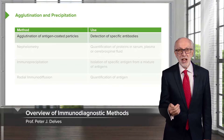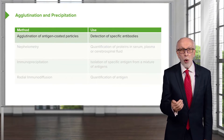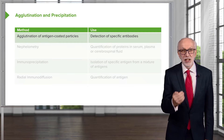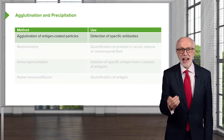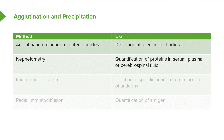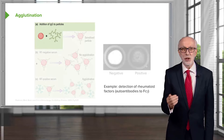Agglutination and precipitation can be used for the detection of antibodies or antigens. In the agglutination of antigen-coated particles, there is detection of specific antibodies. In nephilometry, there can be quantification of proteins in serum, plasma, or cerebral spinal fluid. Immunoprecipitation can be used for the isolation of specific antigen from a mixture of antigens. And radial immunodiffusion is used for the quantification of antigens.